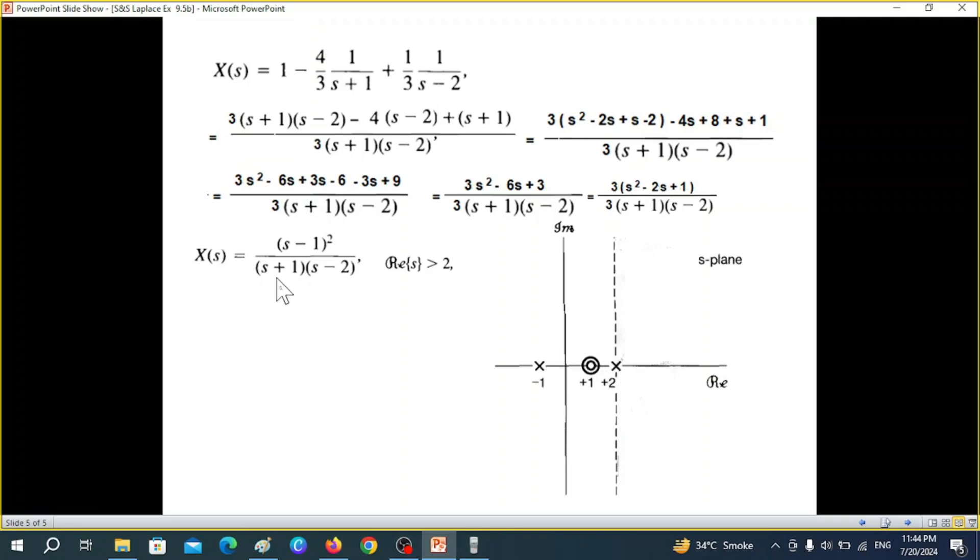Then at s plus one, that means s is equal to minus one, there will be a pole. And s minus two is equal to zero, that means that s is equal to two, there will be a pole. So this is the pole and zero diagram.